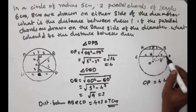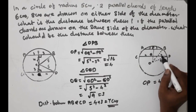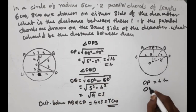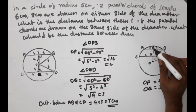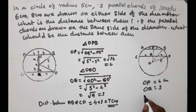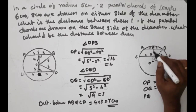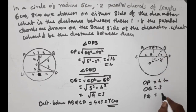5 cm — hypotenuse 5, one side 4 cm, right angle triangle. OQ is 3 cm. OP variable distance is 4, OQ variable distance is 3. For parallel chords on either side: PQ distance is 4 plus 3 equals 7. For same side: PQ distance is 4 minus 3 equals 1 cm.